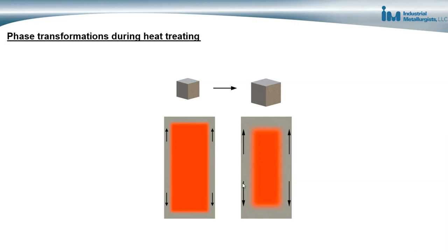The inner metal tries to expand against the already-transformed outer layer. Because it is constrained by the outer layer, this puts the outer layer in tensile residual stress — the inner layer is pushing outward against it. The result is that a phase transformation involving a volume increase will produce tensile residual stresses in the metal when the process is completed.